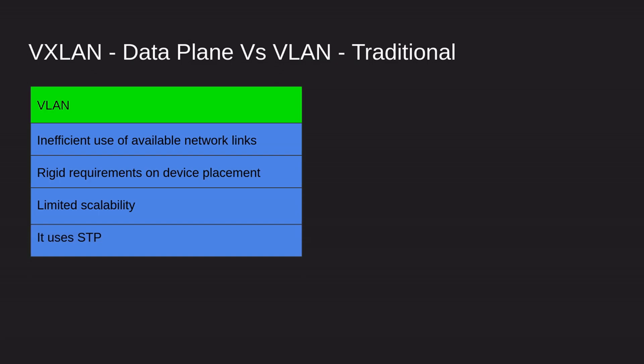Traditional VLANs use STP, and everybody knows STP is a pain. One of the points of SD Access is to get rid of STP. A lot of companies are trying to eliminate STP by removing Layer 2 altogether and just having Layer 3 everywhere, routing with OSPF everywhere.